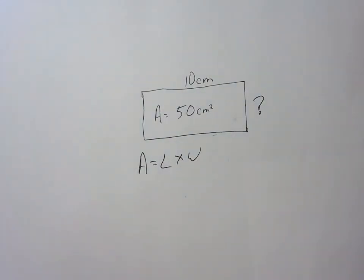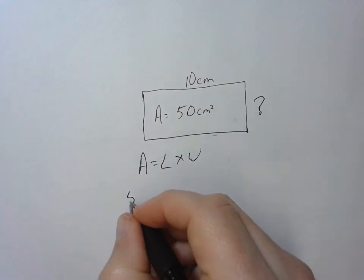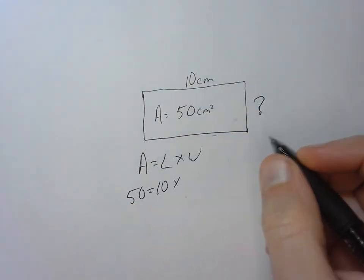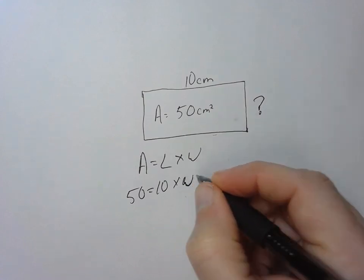And I can plug in the numbers that I know. So my area is 50, my length is 10, and I'm multiplying that by my unknown, my width.